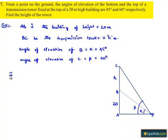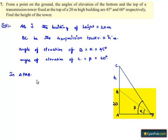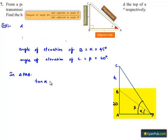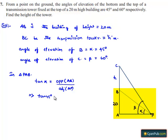Now let us consider triangle PAB. In triangle PAB, the trigonometric ratio tan alpha equals opposite side AB divided by adjacent side AP. So tan 45 degrees equals 20 divided by AP, which implies AP is equal to 20 meters.